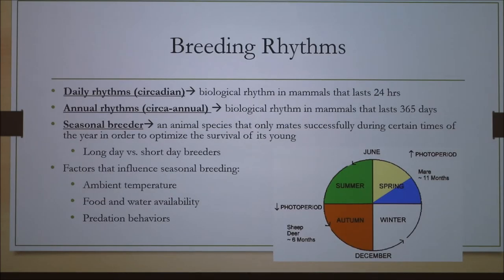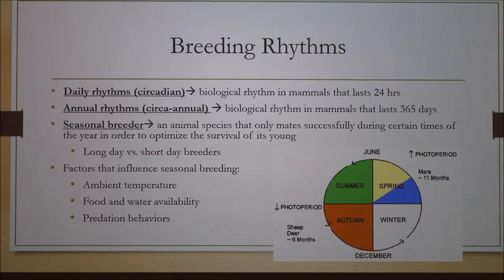First we have to understand what breeding rhythms are, and there are two types. We have the daily rhythms, also called circadian, which are the biological rhythm in all mammals that last 24 hours, or just a day. That's how we know when it's time to sleep and time to be awake. We also have the annual rhythms, which is the biological rhythm that lasts one year or 365 days.